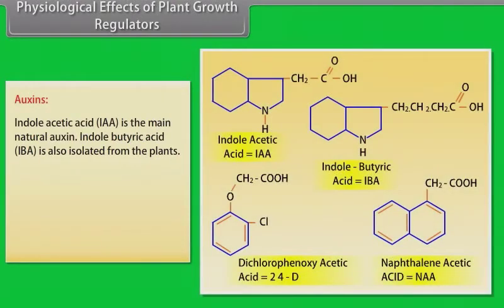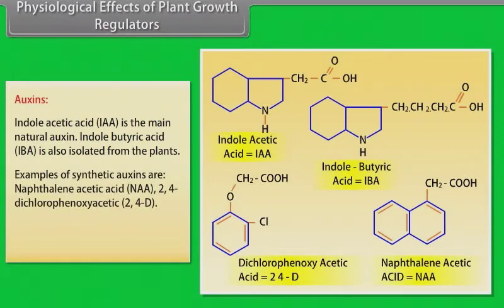Physiological effects of plant growth regulators - auxins. Indole acetic acid is the main natural auxin. Indole butyric acid is also isolated from the plants. Examples of synthetic auxins are naphthalene acetic acid and 2,4-dichlorophenoxyacetic acid. All these auxins are very useful in agricultural field.